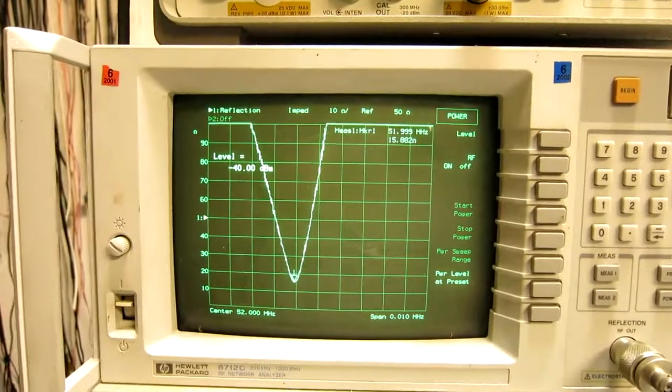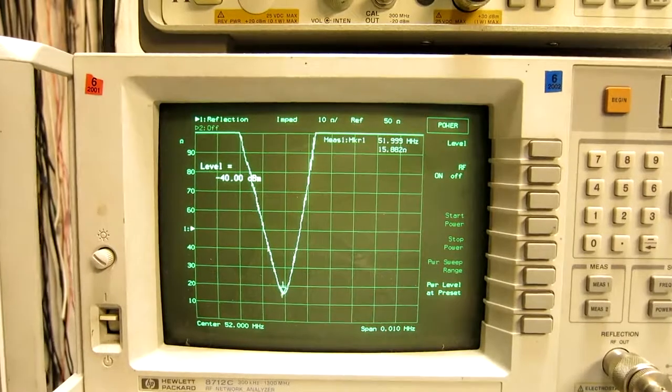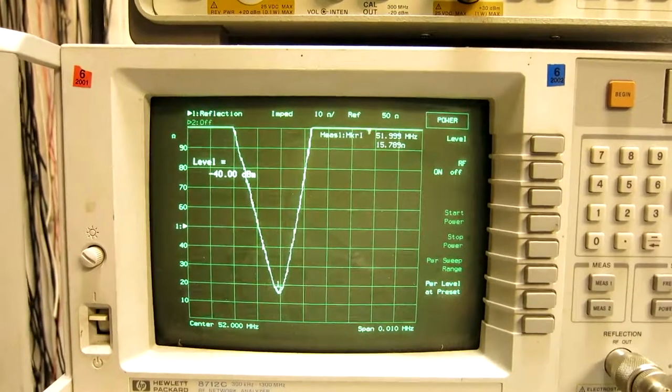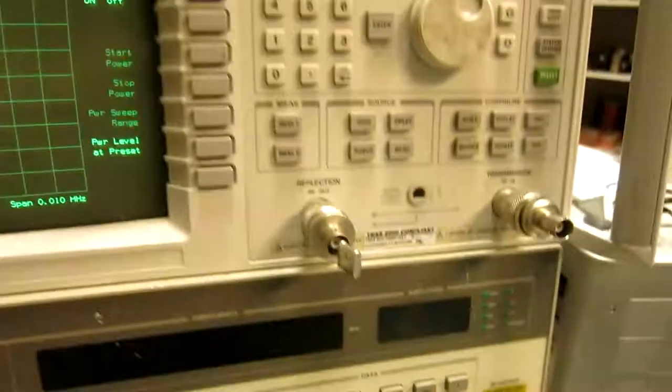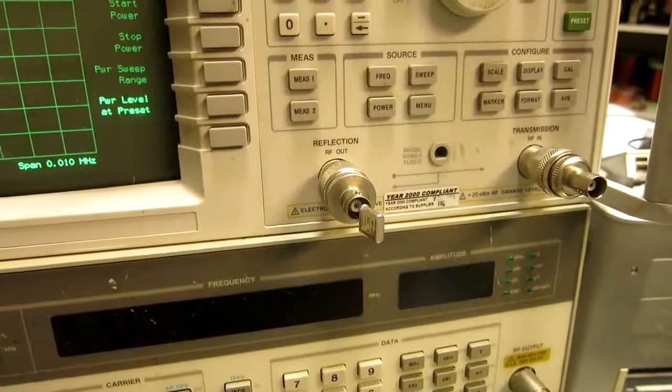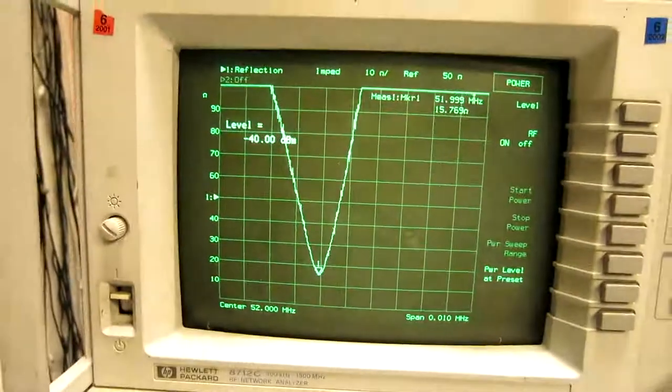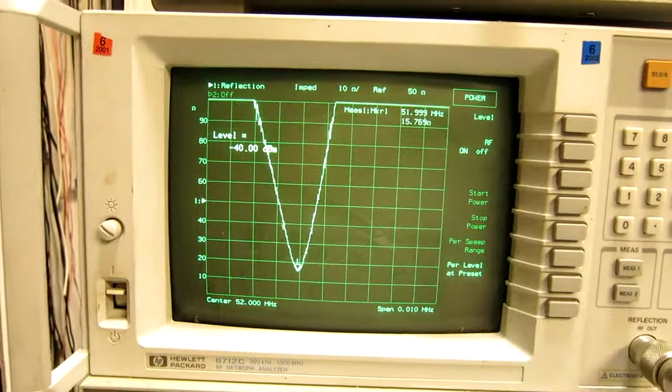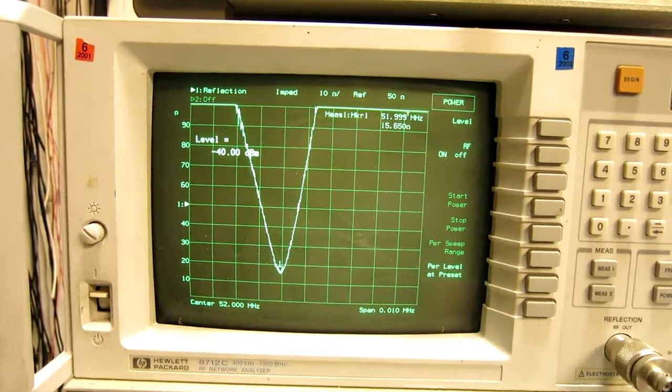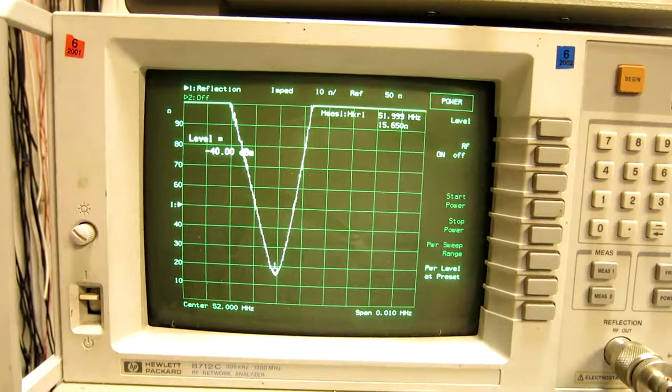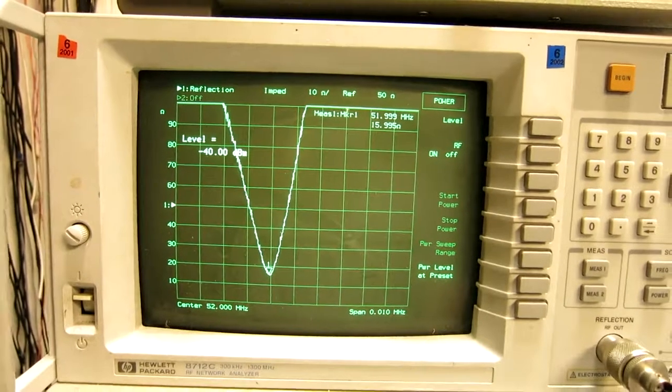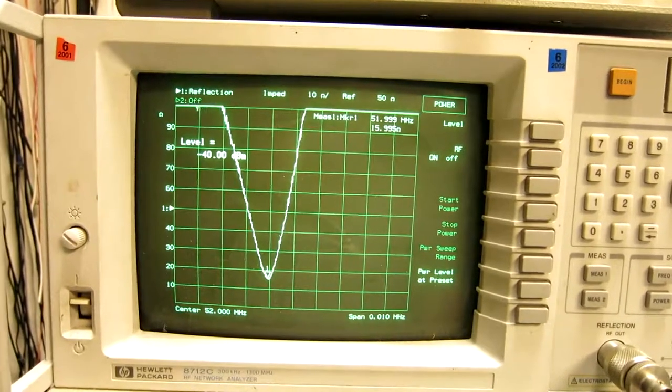I'm going to use these crystals to make a transmission line notch filter. Here is now one of them on the network analyzer. You can see the impedance on the resonance is about 15 ohms. This is at the power level of minus 40 dBm.